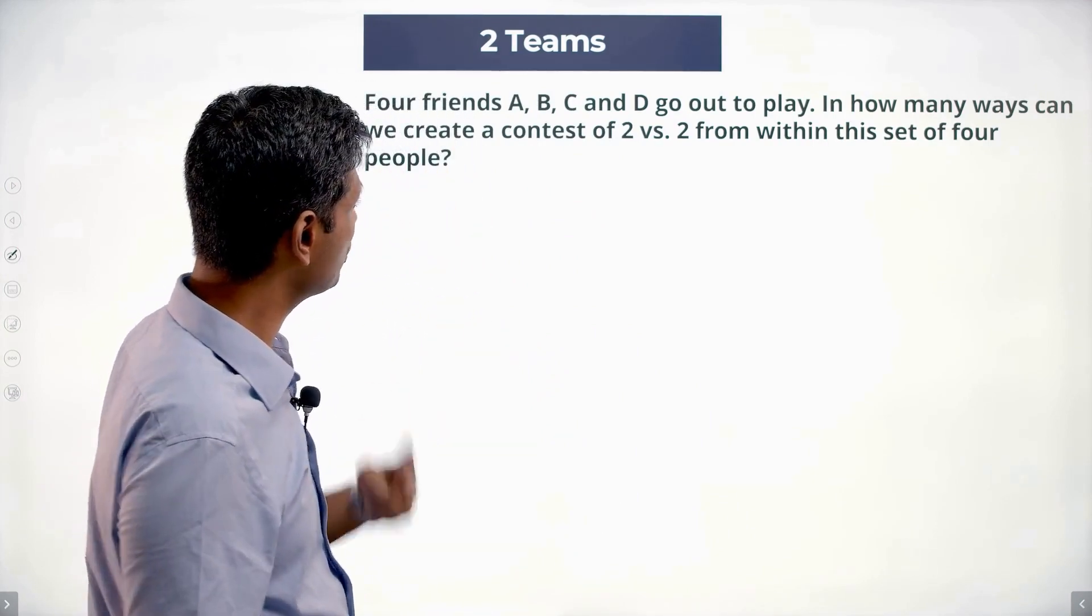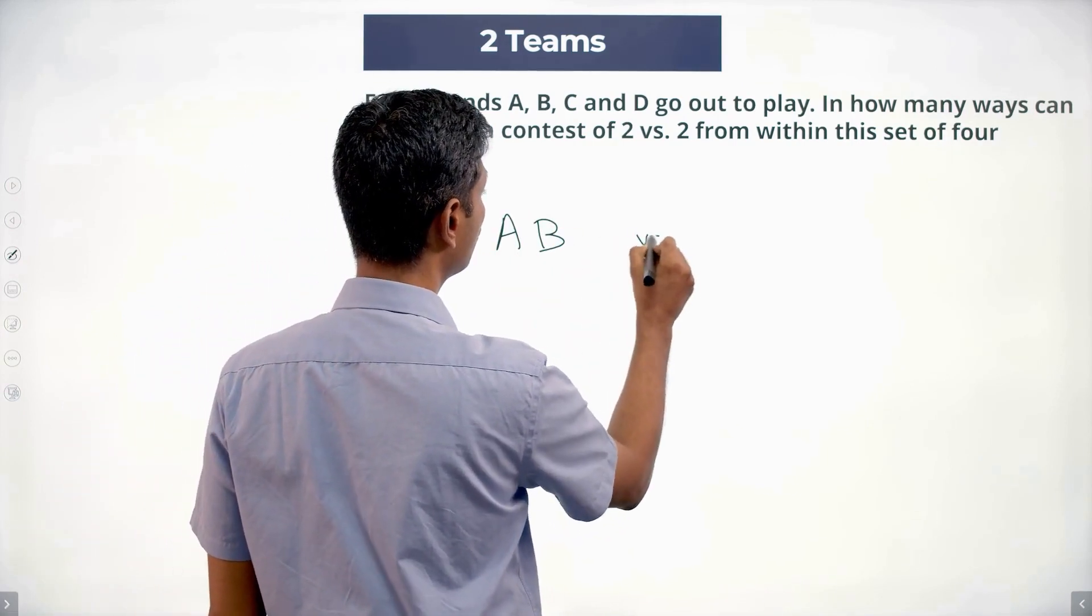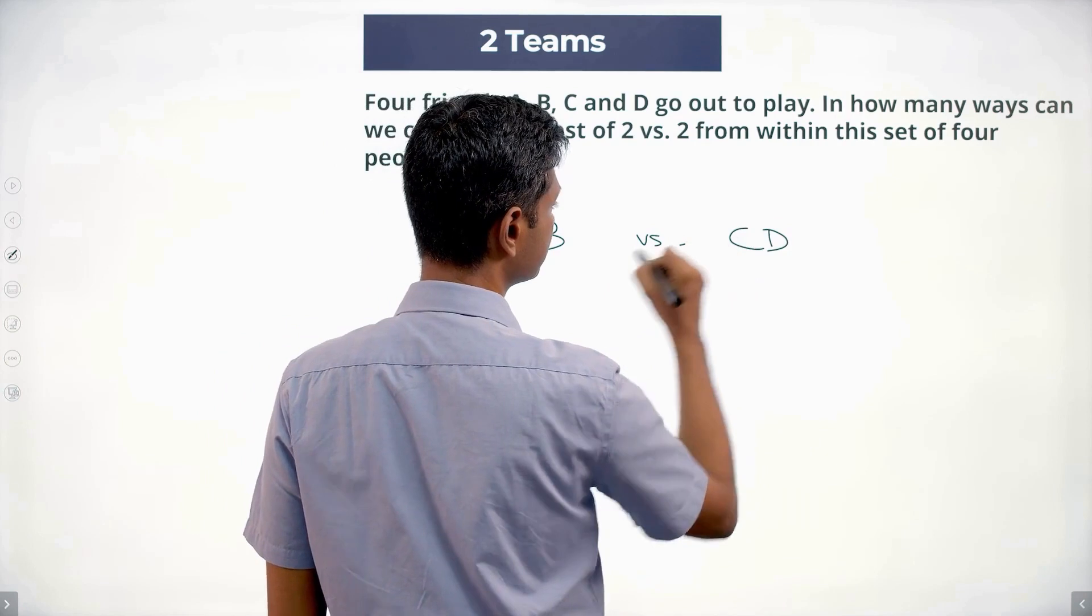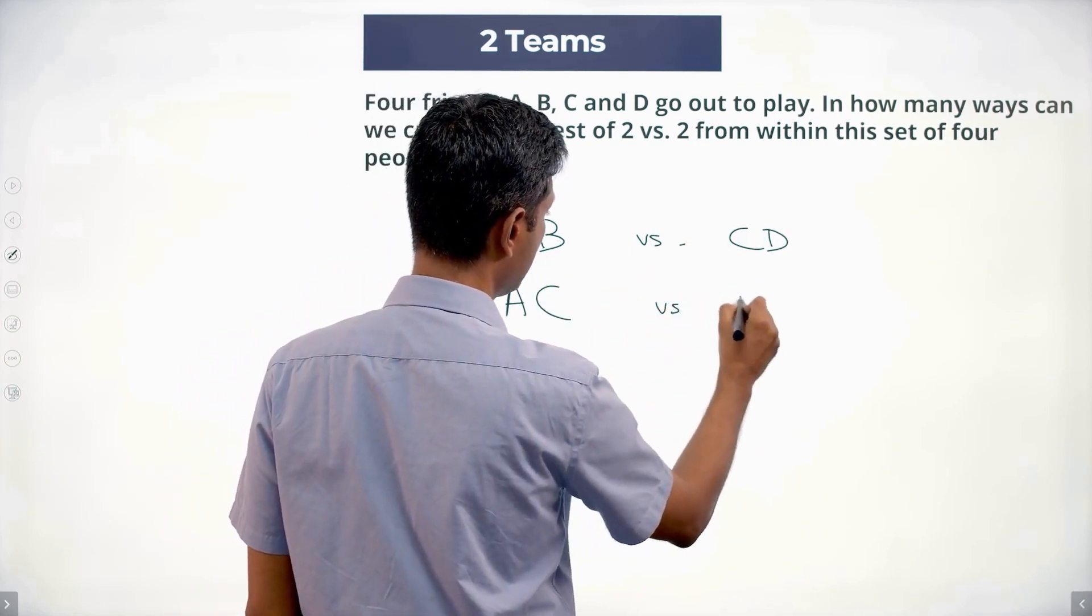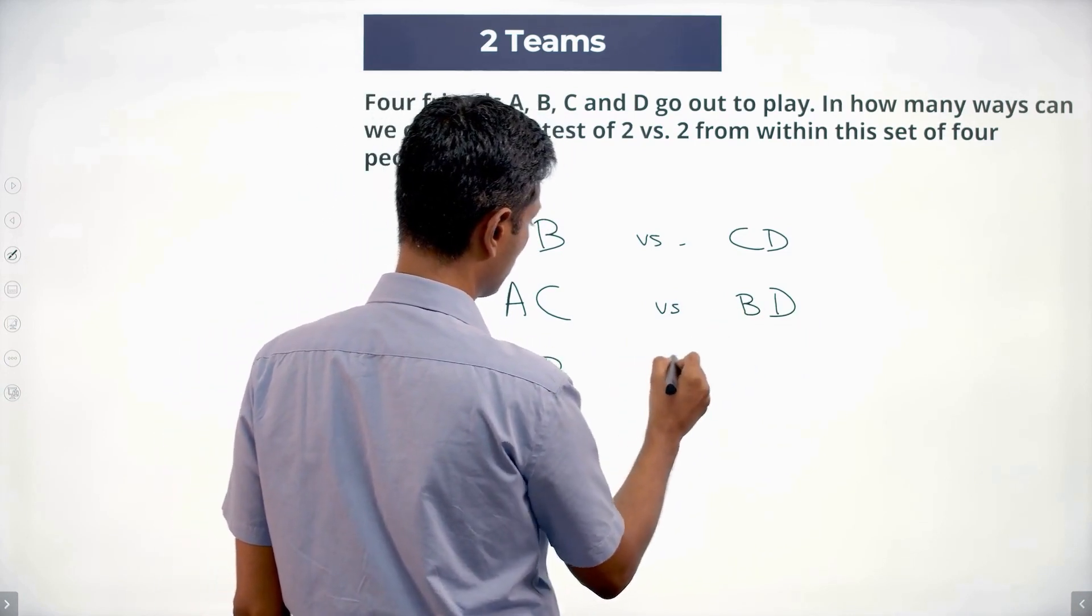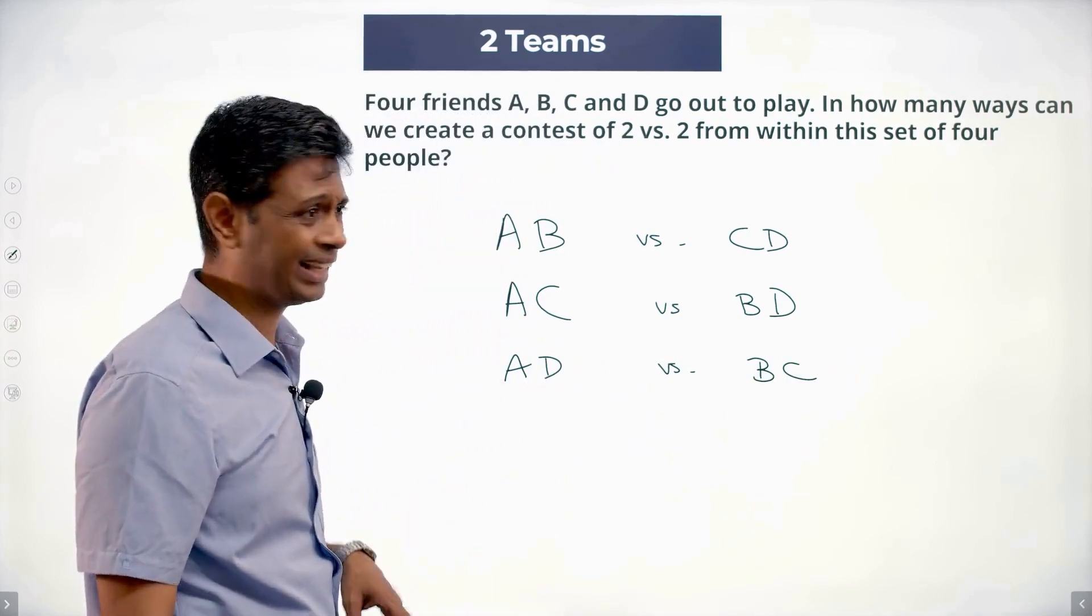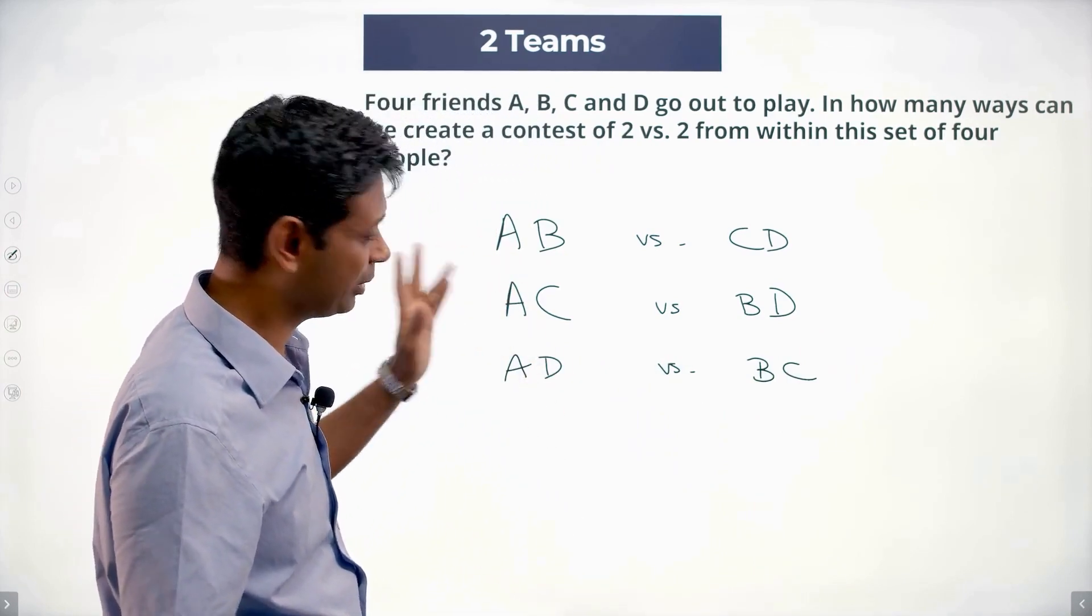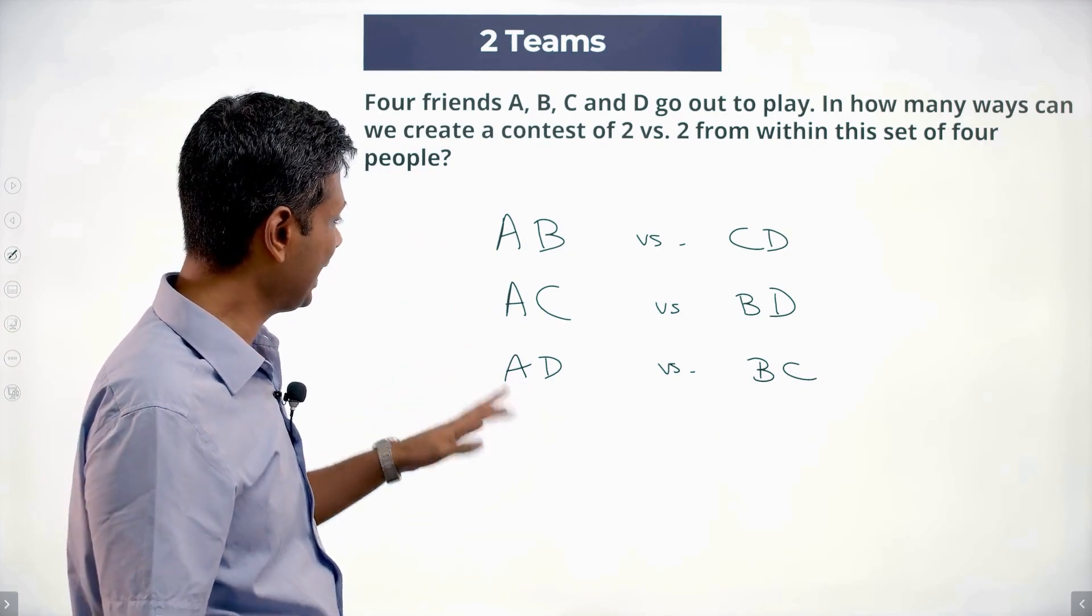I want to select a contest of two versus two. We could have A, B versus C, D. A, C versus B, D. A, D versus B, C. With A, I could pair up B, pair up C, I could pair up D. So A and B versus C and D, A and C versus B and D, A and D versus B and C. Three possibilities.